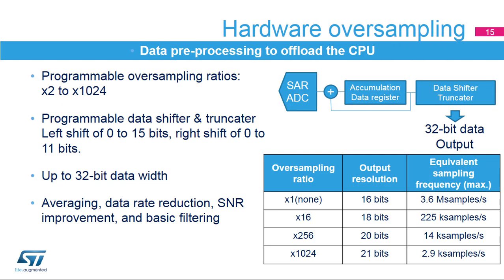The ADCs support hardware oversampling — they can sample by 2 to 1024 times without CPU support. The converted data is accumulated in a register, and the output can be processed by the data shifter and truncator. 16-bit data can be extended and presented as a 32-bit data register. This functionality can be used as an averaging function, for data rate reduction, signal-to-noise ratio improvement, and basic filtering.